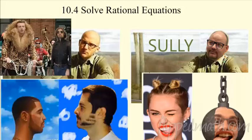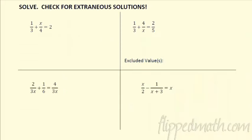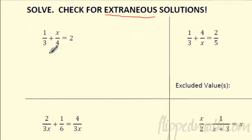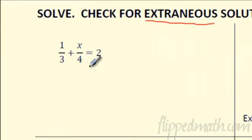Let's get this rolling and solve some equations. So it says solve, check for extraneous solutions. When we're looking for extraneous solutions, we're looking for an answer that actually got canceled out, so it won't count. The first one — we don't have to worry about it because we're never dividing by a variable, so it's not going to be impossible to divide by zero. We're safe.